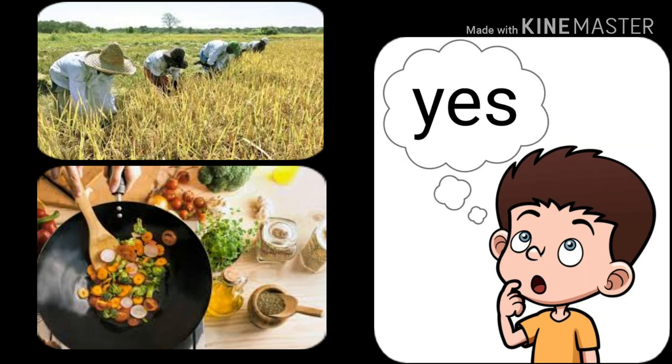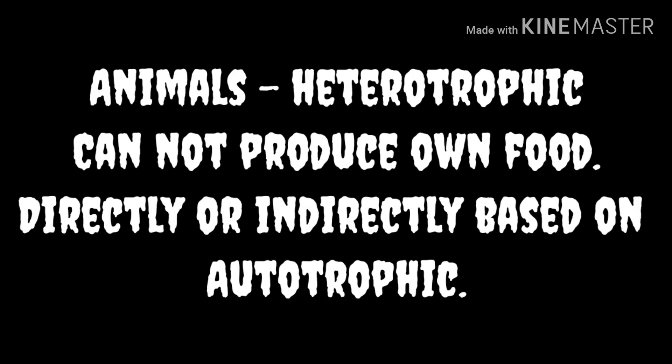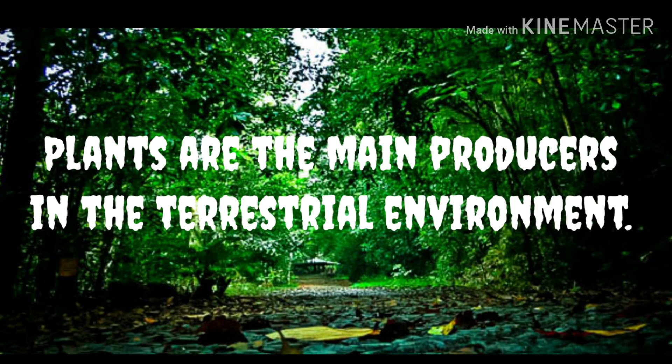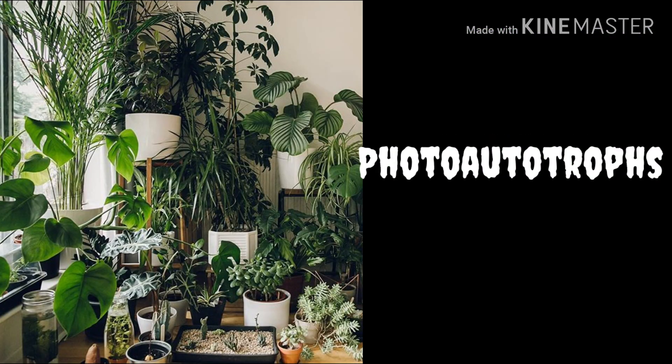Can you produce food? Some of you may say yes because you can cultivate crops and prepare food, but we humans are animals. Animals are heterotrophic — heterotrophic means we can't produce our own food. We directly or indirectly depend on producers for our food. In our terrestrial environment, plants are considered as the main producers.